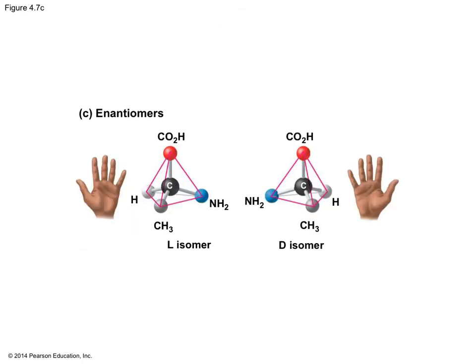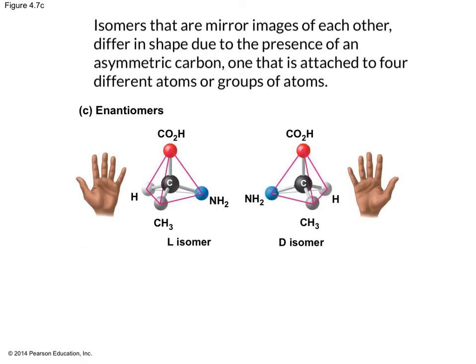Enantiomers are isomers that are mirror images of each other. These compounds have the same molecular formula but different structures, and in this case the compounds are mirror images of each other. This is because they differ in shape due to the presence of an asymmetric carbon — one that is attached to four different atoms or groups of atoms. Because of their arrangement, enantiomers are non-superimposable, meaning we cannot place one on top of another and get the same molecule.